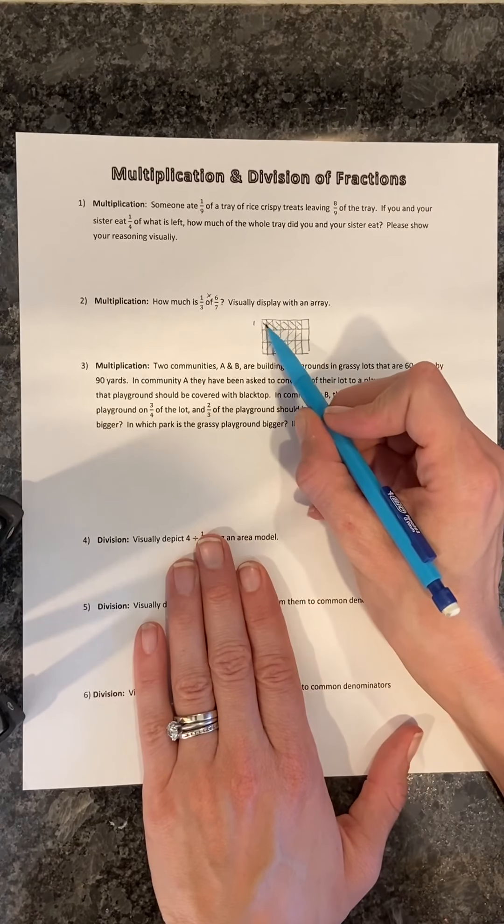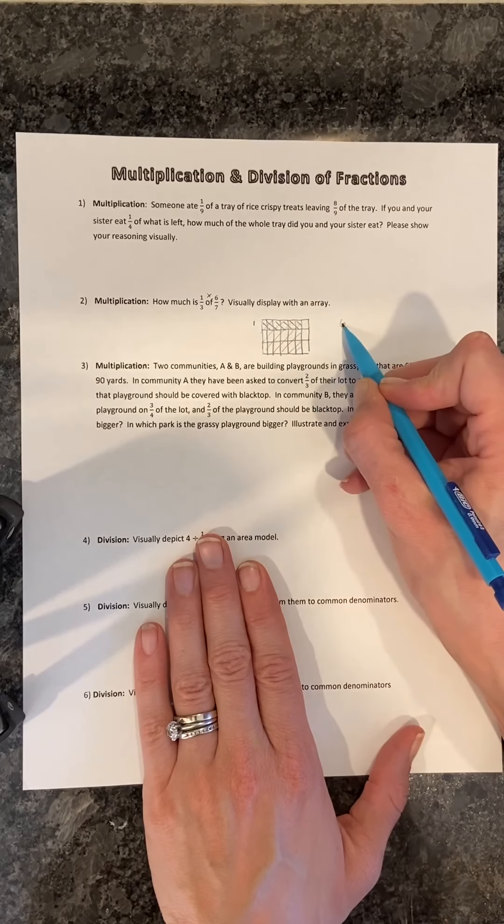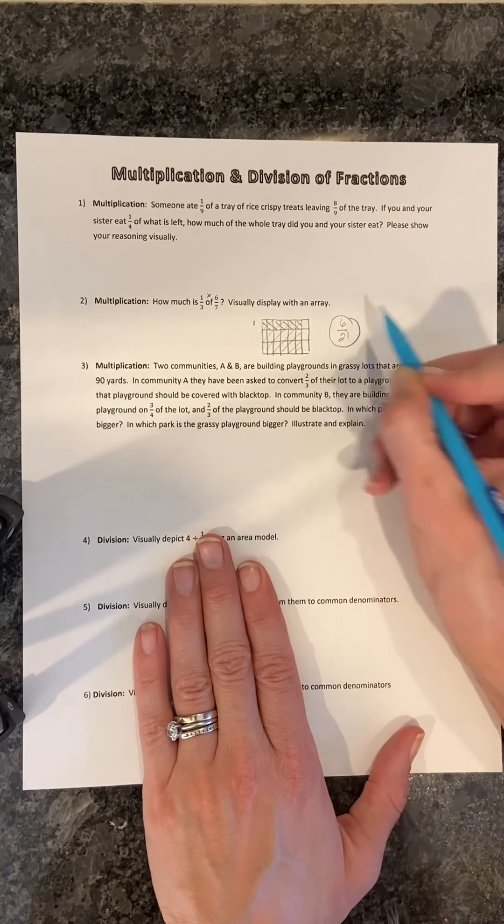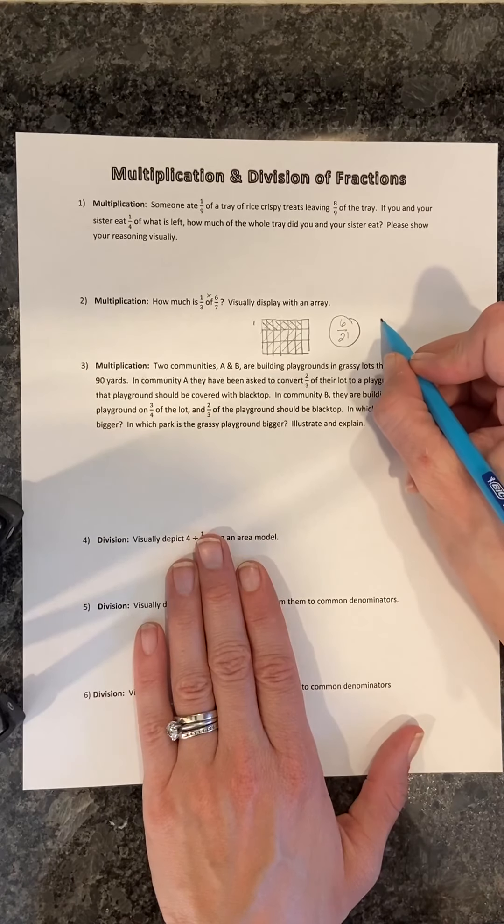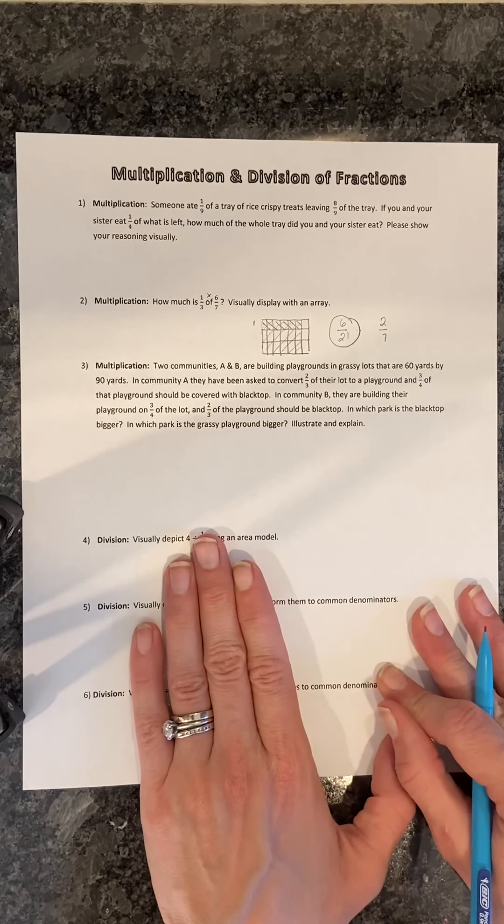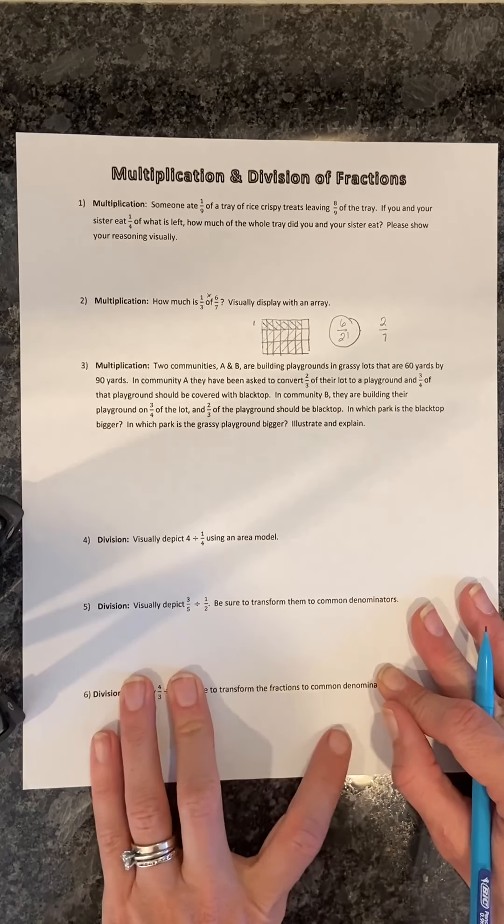One-third of the six-sevenths comprises one, two, three, four, five, six. Six of what? Six of 21 little rectangles altogether. That would be fine. Of course, we could reduce that as well to two-sevenths. But you should accept that, especially when you're initially teaching, because the focus is not reducing fractions but just finding the overall product.